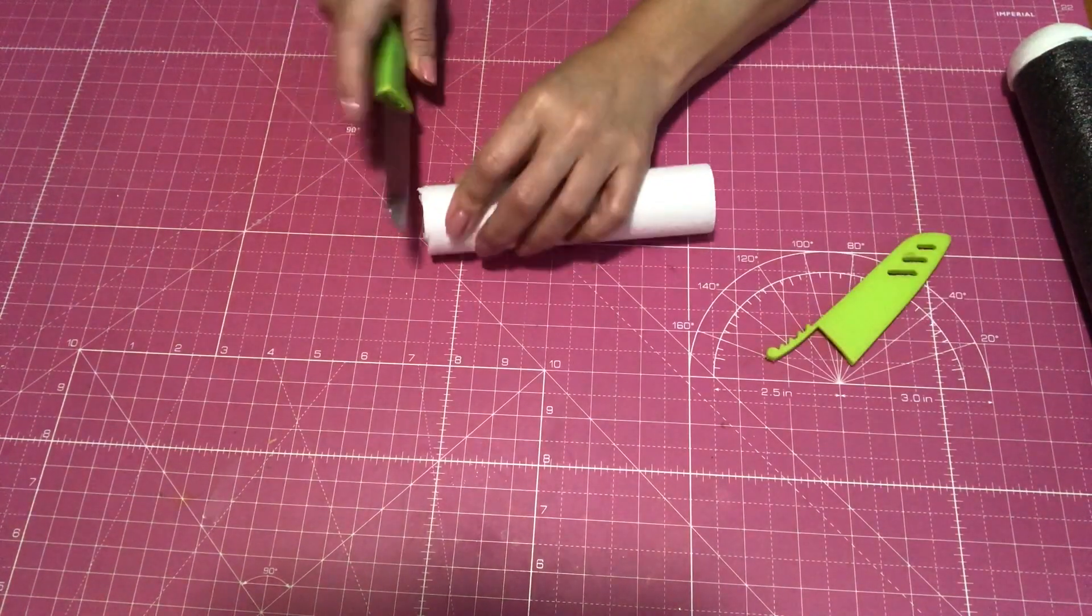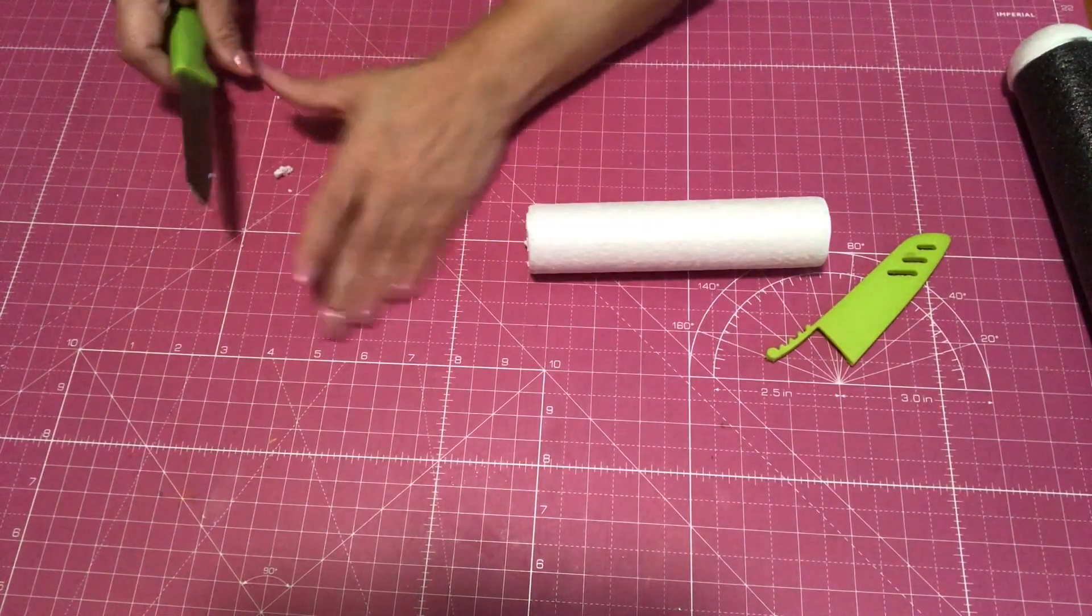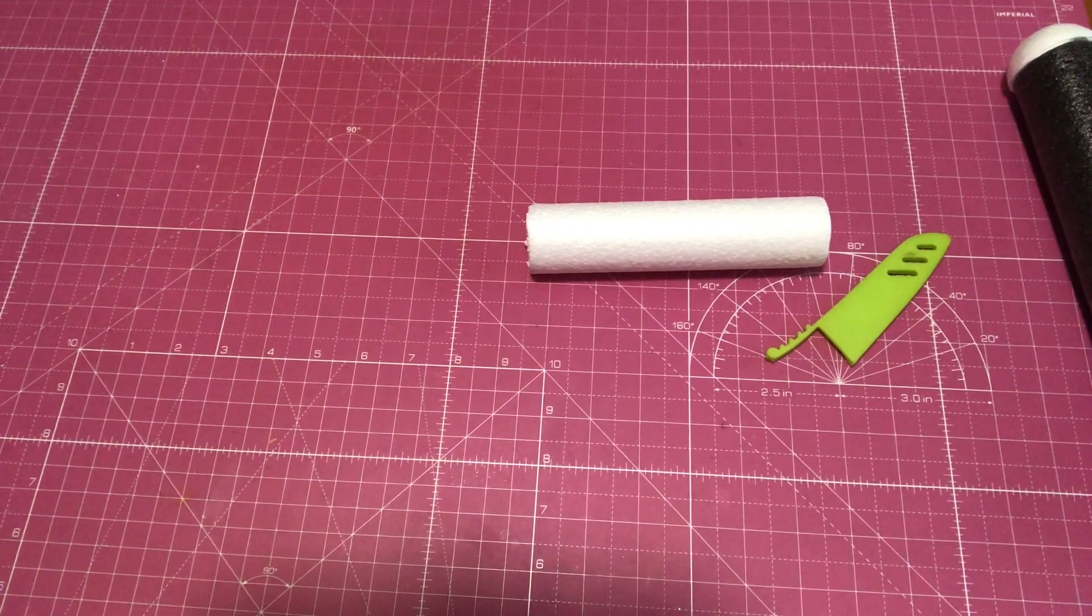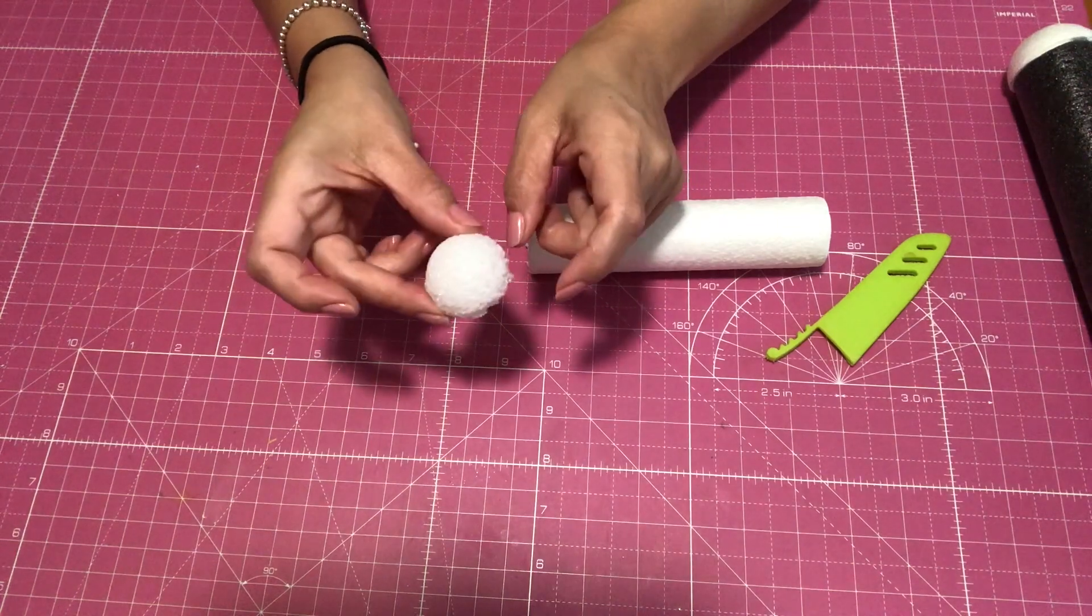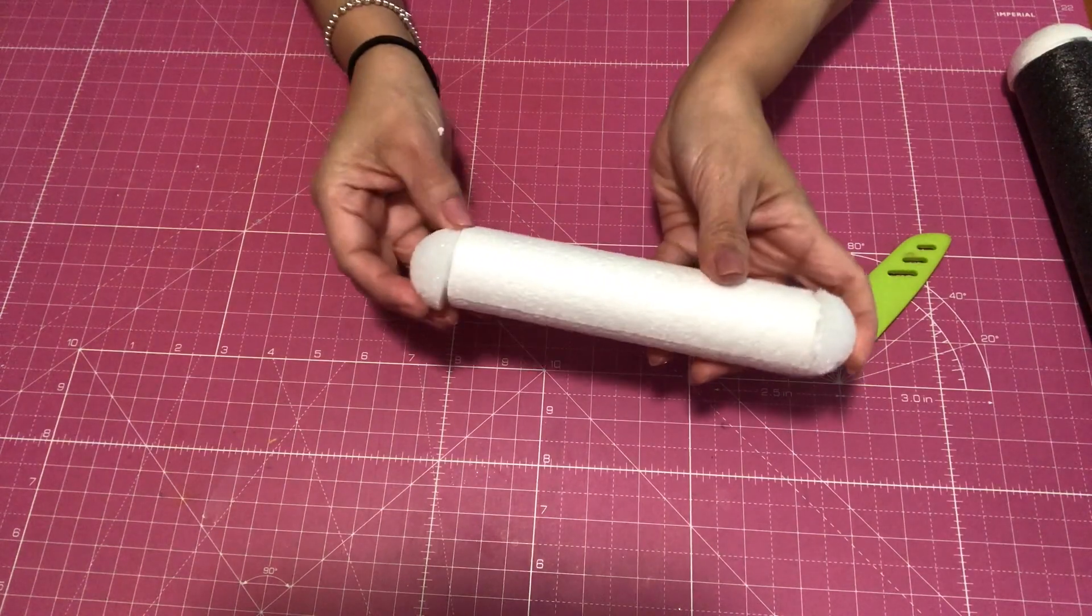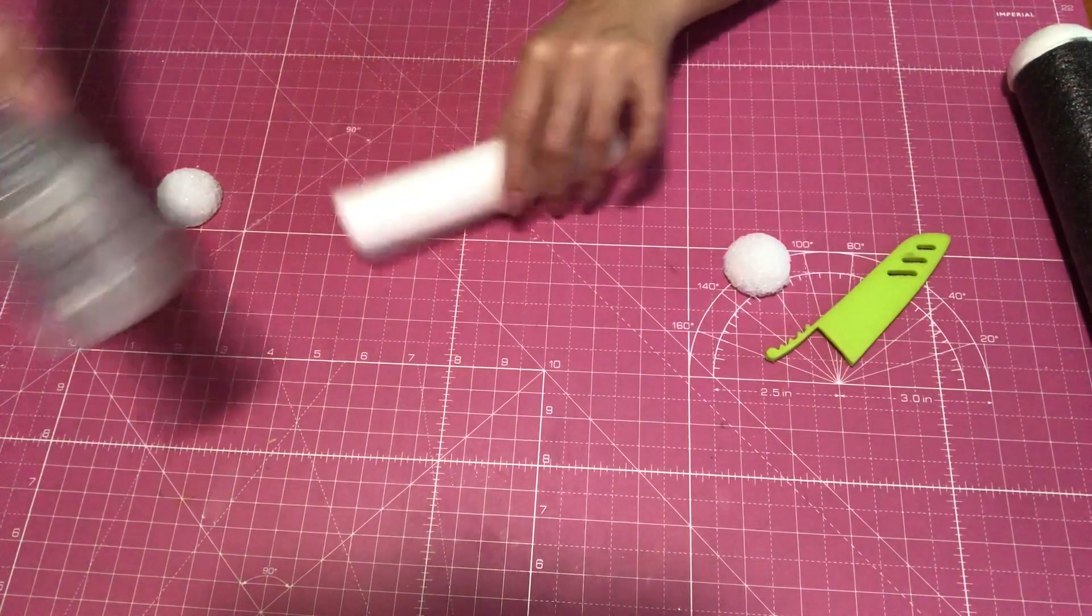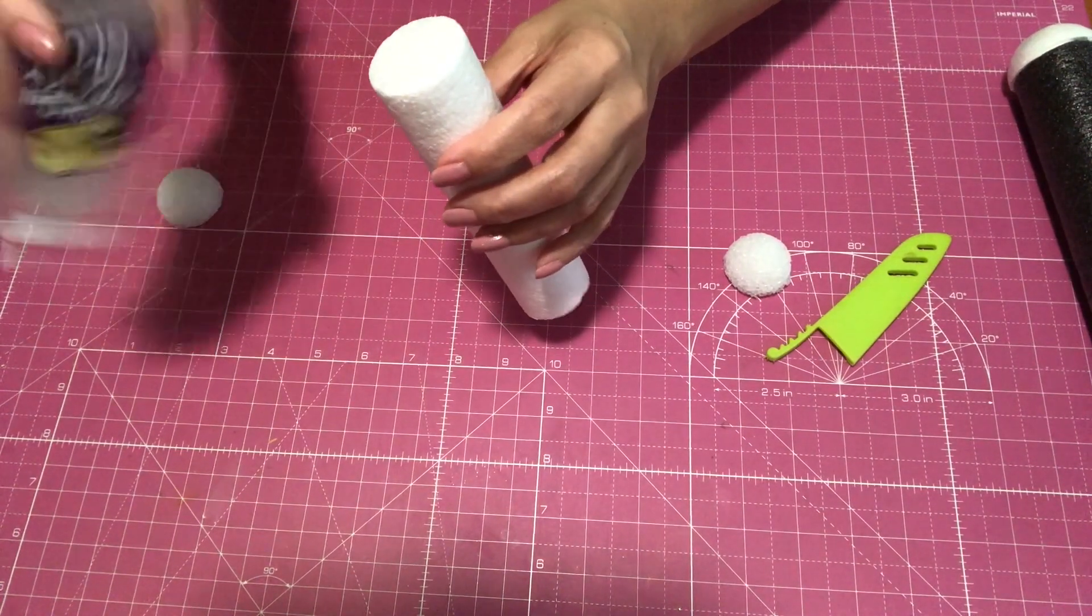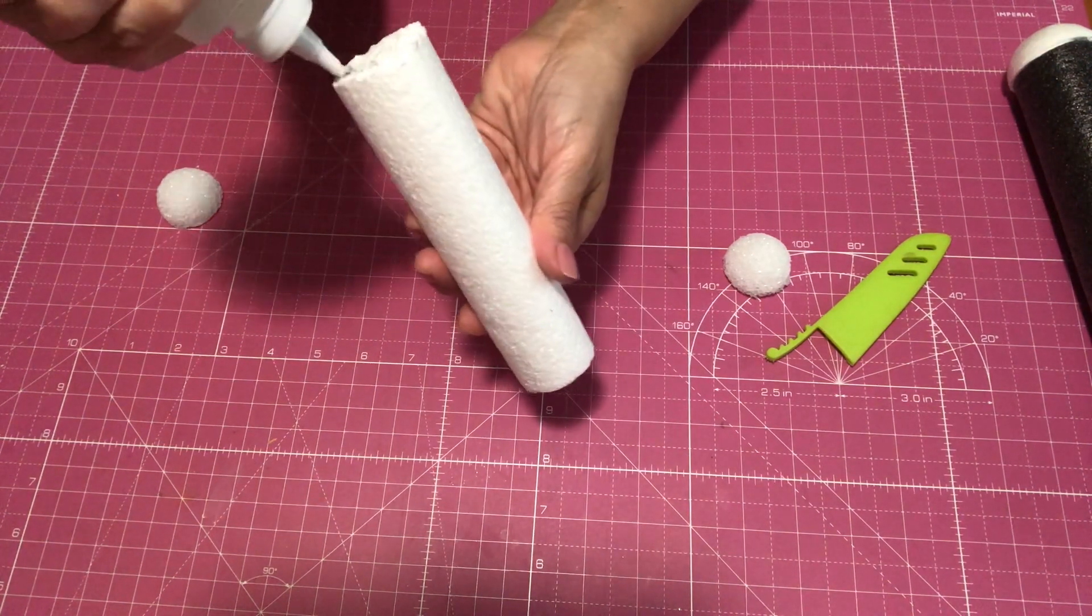This styrofoam I actually got from Hobby Lobby, it's a five inch. And here I have also a styrofoam. These foam balls I got from the Dollar Tree. Hobby Lobby also sells them but the Dollar Tree is a lot cheaper. My tacky glue did work on this styrofoam so I just went ahead and used that.